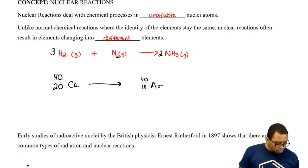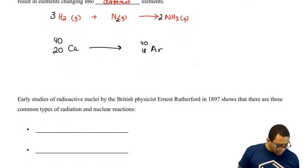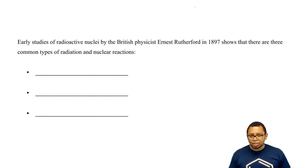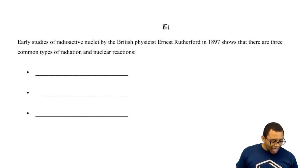Now, when it comes to nuclear reactions, we can thank the British physicist Ernest Rutherford who really did a lot of experiments with nuclear reactions. His contribution to nuclear chemistry was so great that they actually named element 104 after him. Element 104 is called Rutherfordium.